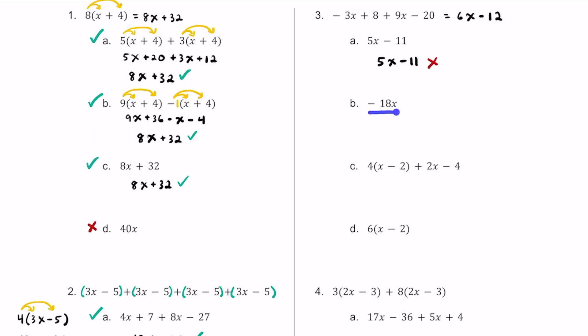For option B, we have negative 18x. That must have come from trying to combine the two terms, but that would only come from a negative 6 and a negative 12. So negative 18x does not work — it looks like we tried to combine like terms but did it incorrectly. Also, you can't combine 6x and negative 12 because one has a variable x and the other is a constant term.